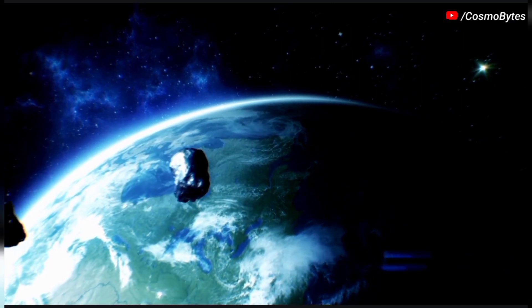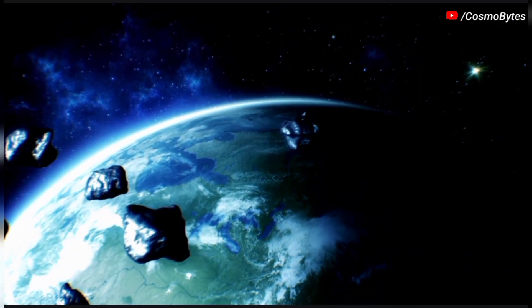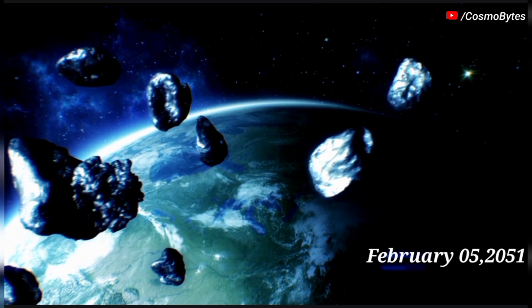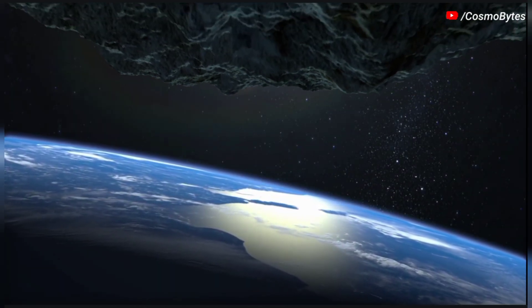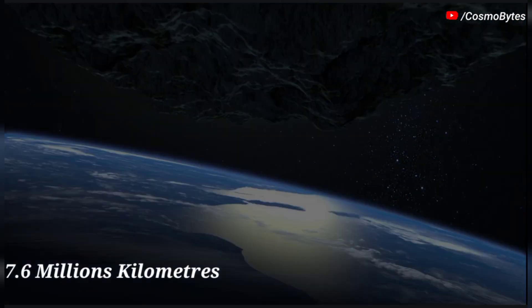The next close approach of asteroid 2017 BU to our planet will happen on February 5, 2051. On that day, its distance to Earth will be 7.6 million kilometers.